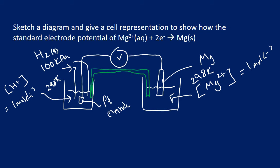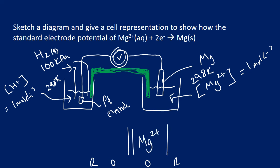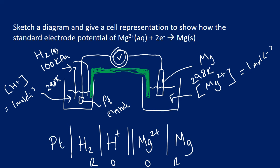The salt bridge can be a piece of filter paper soaked in potassium nitrate, or a glass bridge containing a gel with ions — usually potassium nitrate. Be careful that the salt bridge doesn't react with the solutions. The reading on the voltmeter equals the standard electrode potential for magnesium. For the cell representation: Pt | H₂(g) | H⁺(aq) ‖ Mg²⁺(aq) | Mg — remember, the most oxidised form is closest to the salt bridge, and the hydrogen half-cell is always on the left.